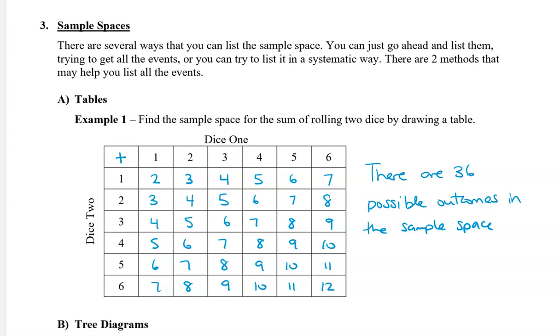However, here we have 5 plus 1, then we have 1 plus 5, which are different. You can think of them being different, for example, if we use two different color dice. So let's say one is red and the other one is blue. If the red one shows 5 and the blue one shows 1, that is different from the red being 1 and the blue one being 5. So that's why there are 36 possible outcomes in this sample space.